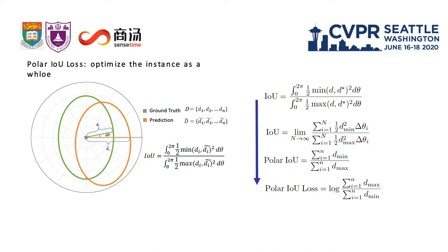We introduce polar IOU loss starting from the definition of IOU, which is the ratio of intersection area over union area between the predicted mask and ground truth. Polar IOU loss can optimize the instance as a whole. The detail can be seen in this slide.